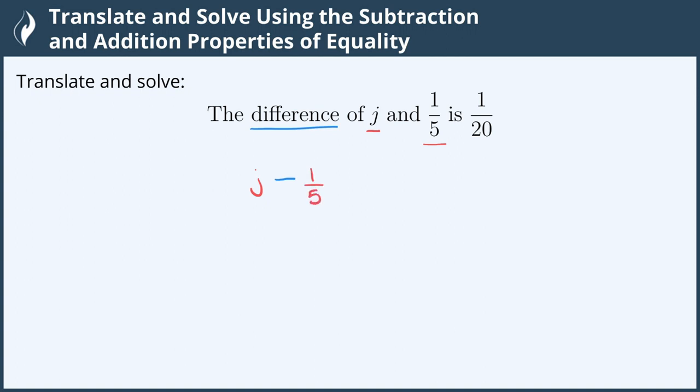Then to continue our sentence it says is one-twentieth. Is translates to equals and then we'll finish with one-twentieth.